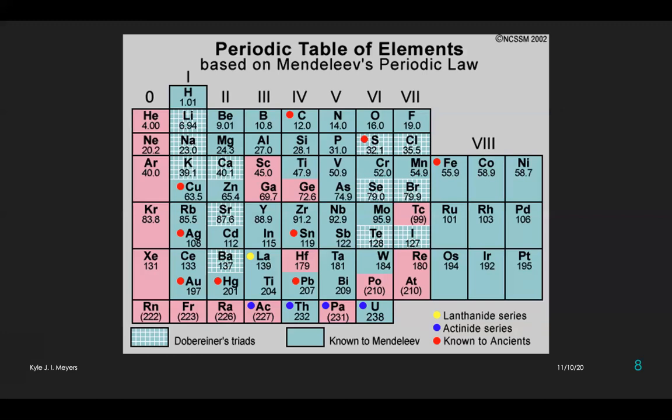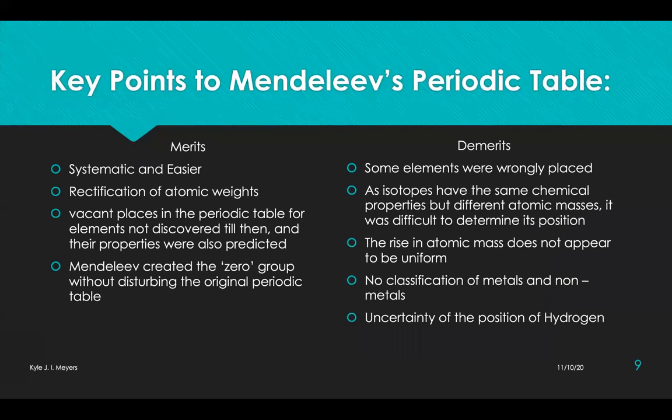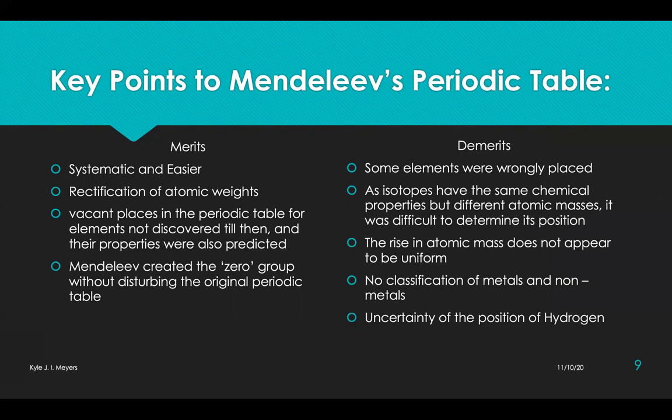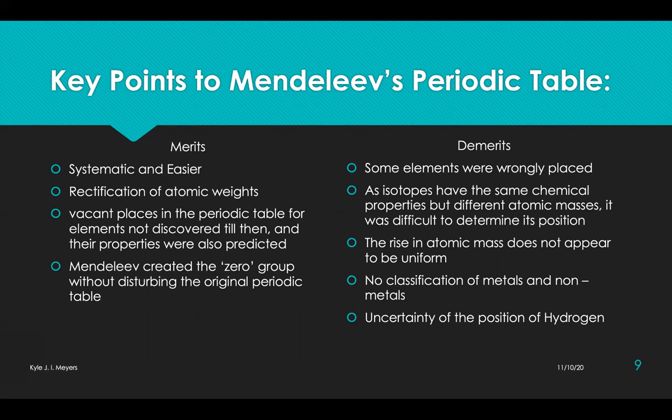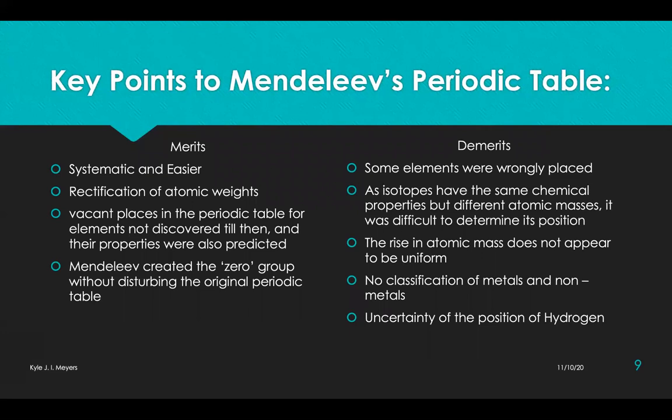For the fact that Mendeleev was the father of the periodic table, there must have been some key merits, and also for the fact that his periodic table was replaced later, there must have been some demerits. First merit: the study of the properties of elements became more systematic and easier. Several vacant positions which were kept for guidance led to the discovery of new elements. That was one of the beautiful things which Mendeleev did and one of the reasons why he was credited to be the father of the periodic table.